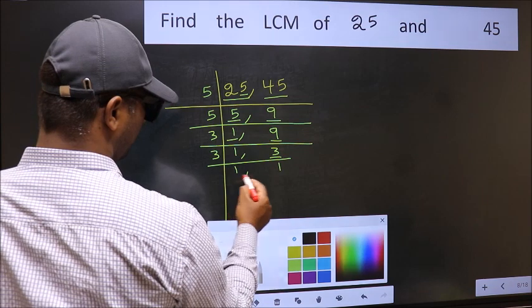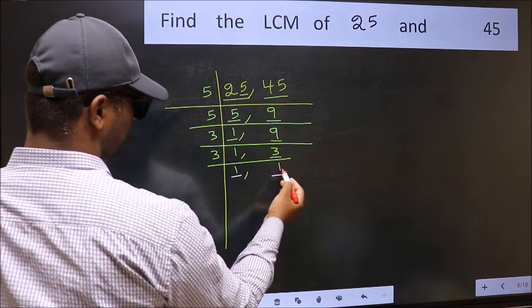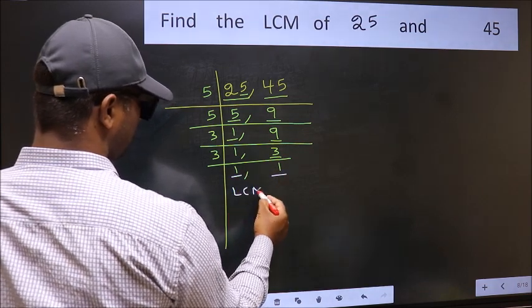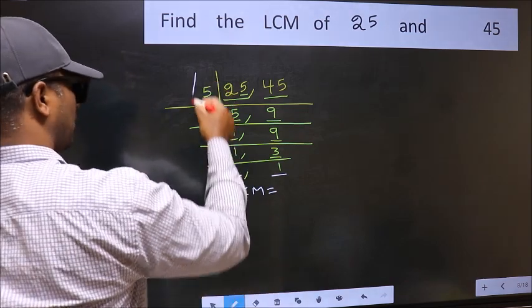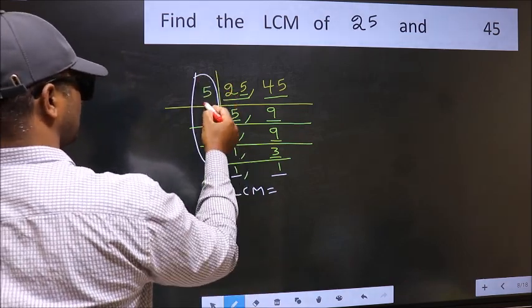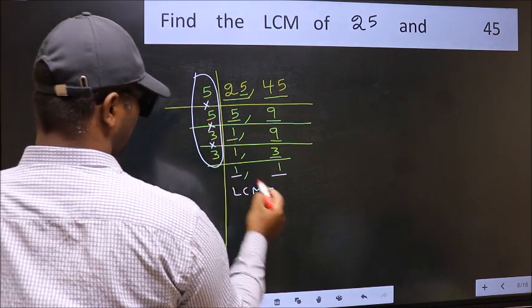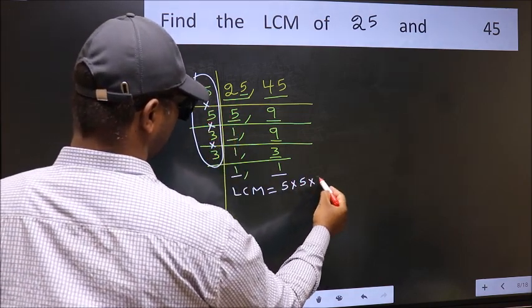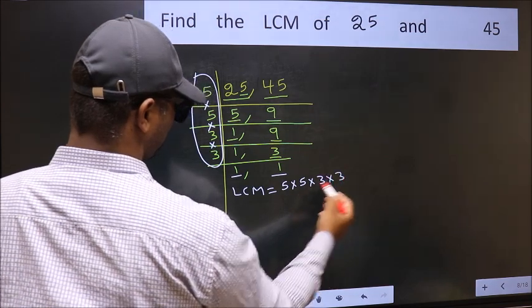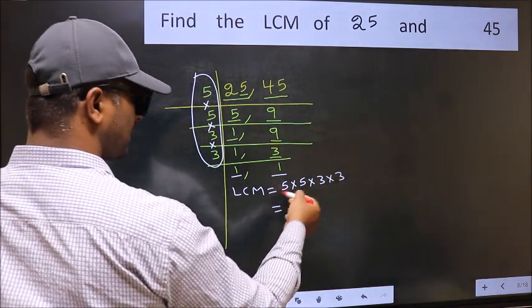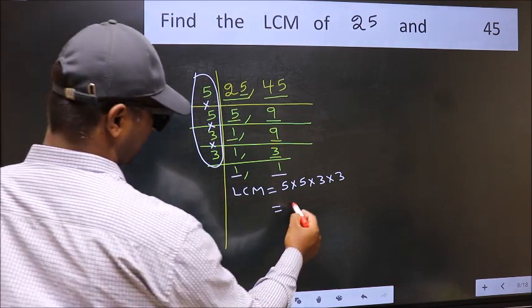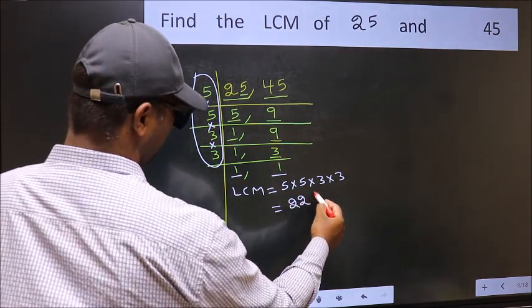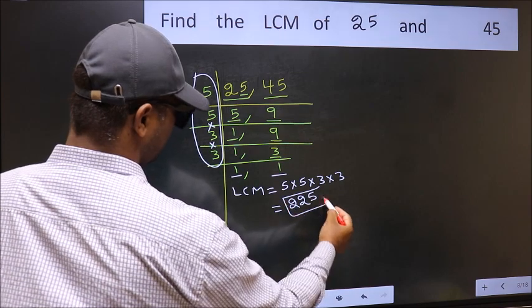So, we got 1 in both places. So, our LCM is the product of these numbers. When we multiply these numbers, we get 225 as our LCM.